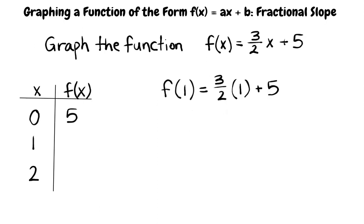Next, input 1 for x. The function becomes 3 over 2 times 1 plus 5. Since anything times 1 is itself, 3 over 2 times 1 is 3 over 2. This simplifies to 3 over 2 plus 5. To add these, we need to find a common denominator.